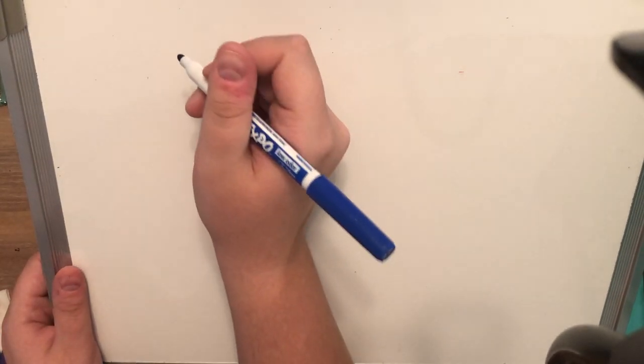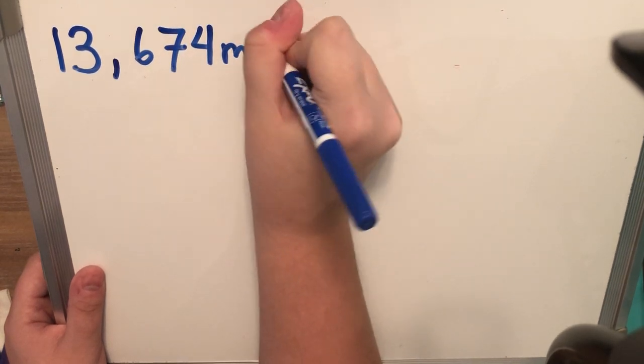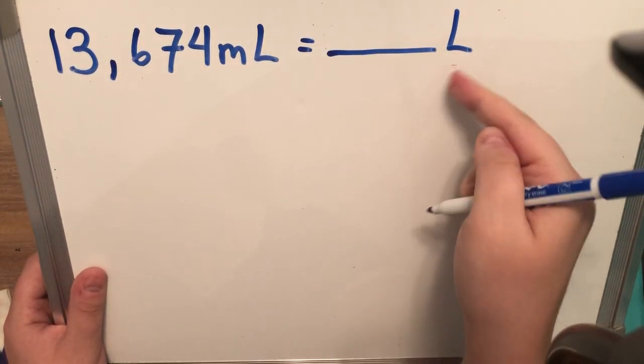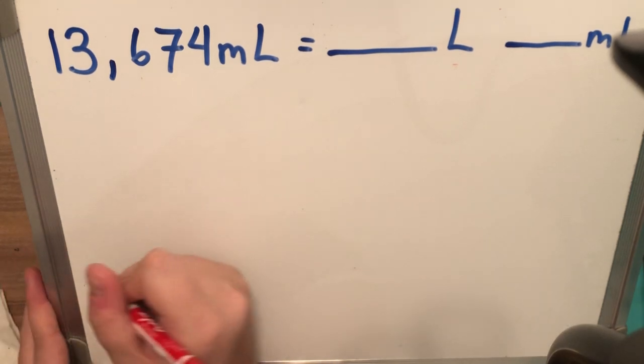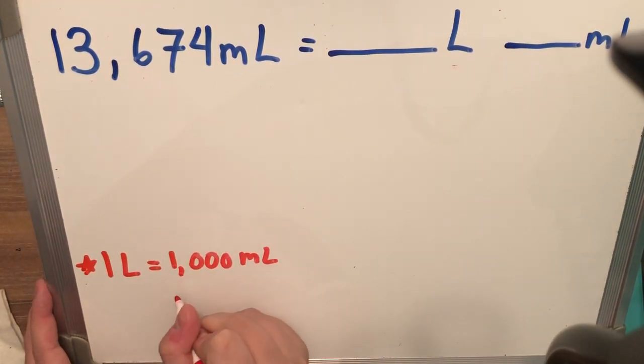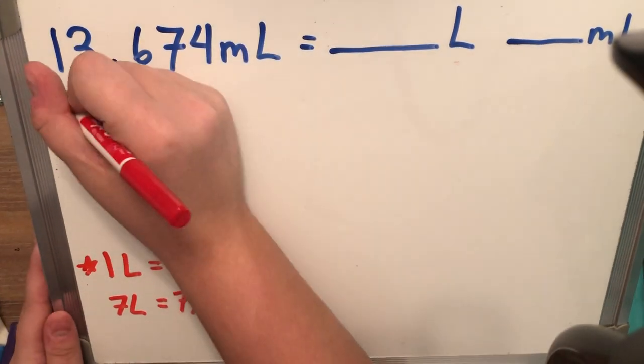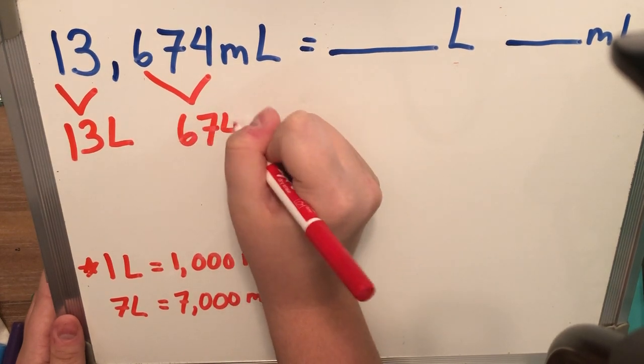Now, we're going to go on to liters and milliliters. And we're going to do the same exact thing as we just did with the kilograms and grams. I have 13,674 milliliters. Now, remember with milliliters, you need a tiny m and a big L. And we're going to figure out how many liters, big capital L, and milliliters are in this problem. And my golden ticket is one liter is worth 1,000 milliliters. So, you guessed it, if I had 7,000 milliliters, it is worth 7 liters.